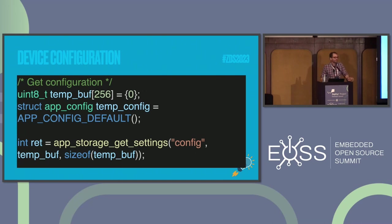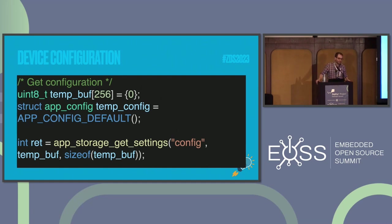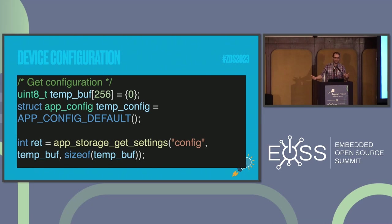Here's an example of actually getting the configuration. You can see I'm setting that temporary config and setting all the standard defaults. Why not just set it to zero? Well, some of the defaults might not be zero. Then we're going to try to decode into that struct. If we can't find a value — maybe something has changed, maybe you have an OTA update — at least it's going to use that same default value if it's no longer available in the configuration on the device.